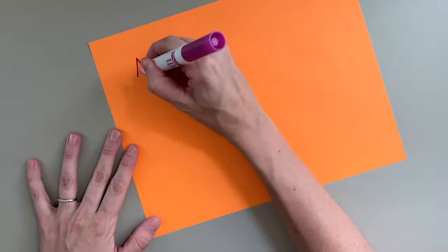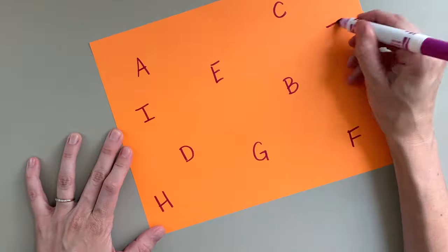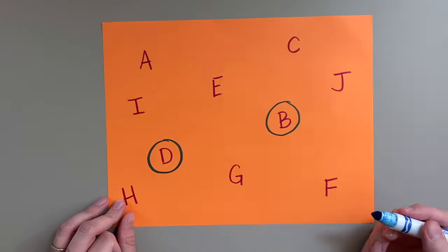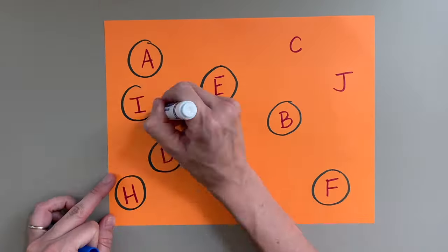Last on my list is circle the letters. You will need a piece of paper and a pen. Write a few letters on a paper or whiteboard if you choose and ask them to find each letter individually. Then circle it when they find it.